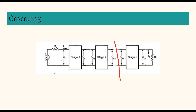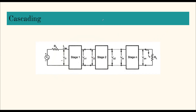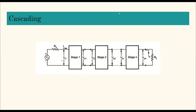So that is cascading. Another important term is coupling — how the stages are connected together. Just like friends are connected by a rope when pulling, two amplifier stages can be connected through a wire directly, a capacitor, a transformer, a resistor-capacitor combination, or an inductor-capacitor combination.